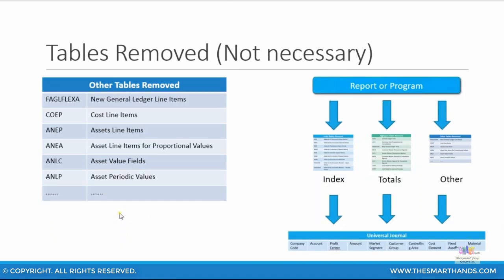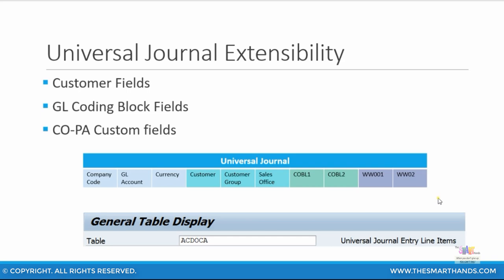The other tables which are removed but indexed via proxy tables are FAGL_FLEXA, COEP, ANEP, ANEA, ANLC, ANLP, and so on. So, just to summarize: the index tables, aggregate tables, and certain line item tables have been removed and replaced by the universal journal.